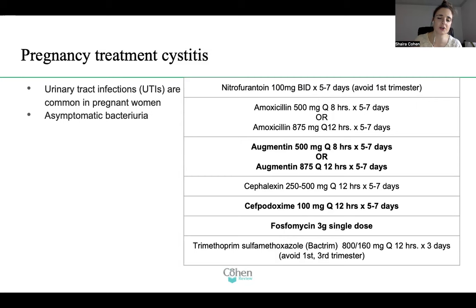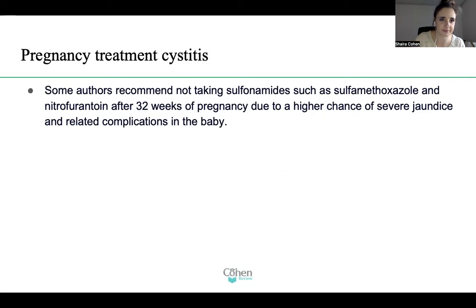So just go with Augmentin — it's such an easy drug. Sulfa drugs are not favored in the third trimester, so remember: Bactrim and nitrofurantoin in the first and third trimester should be avoided if possible. Some authors recommend not taking sulfas after 32 weeks because of a higher risk of severe jaundice-related complications in the baby.